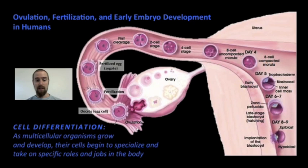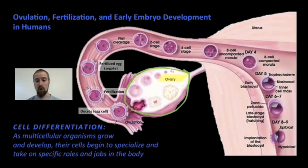In mammals like us, this is where life begins. On this slide, we're seeing some of the earliest stages of human life playing out inside the female reproductive tract. This structure here is called an ovary, and this is where female gametes are made by meiosis. These gametes, called eggs or more specifically oocytes, are released from the ovary into the fallopian tubes during ovulation.